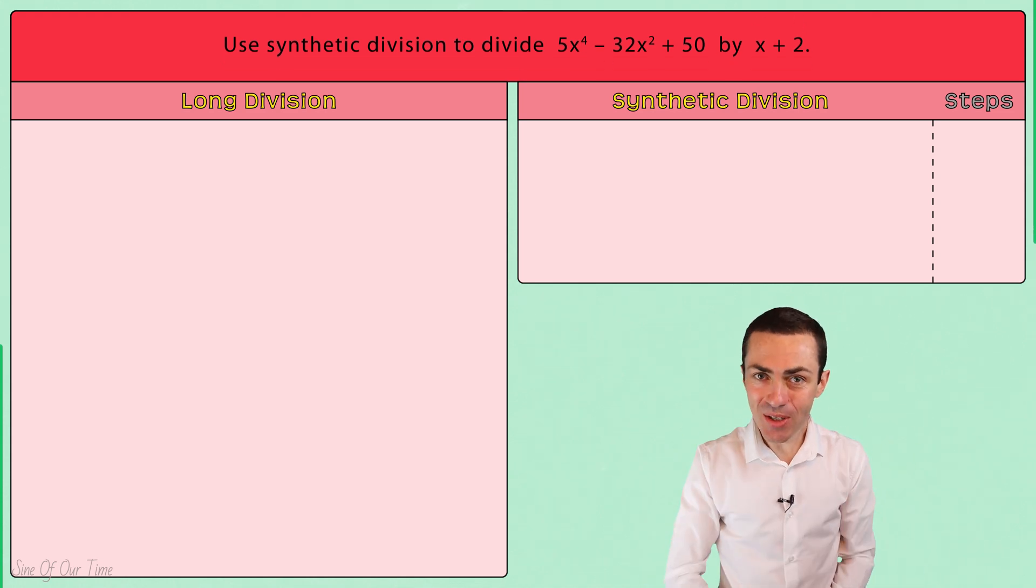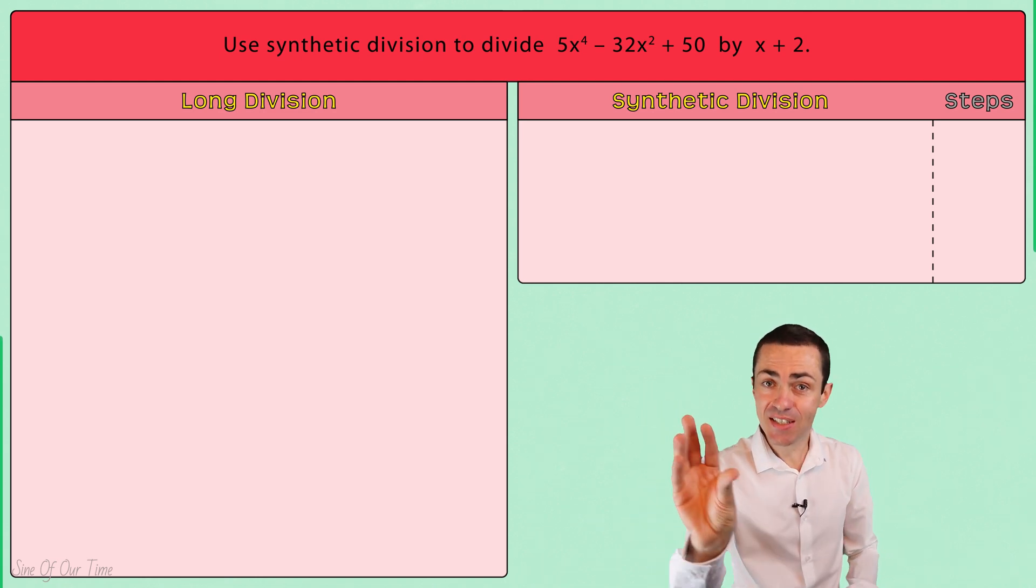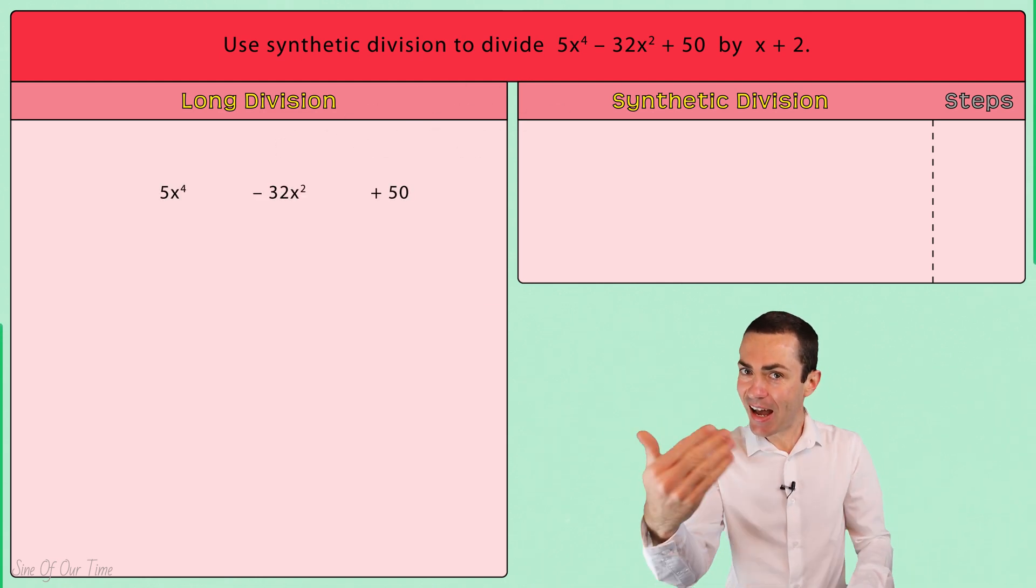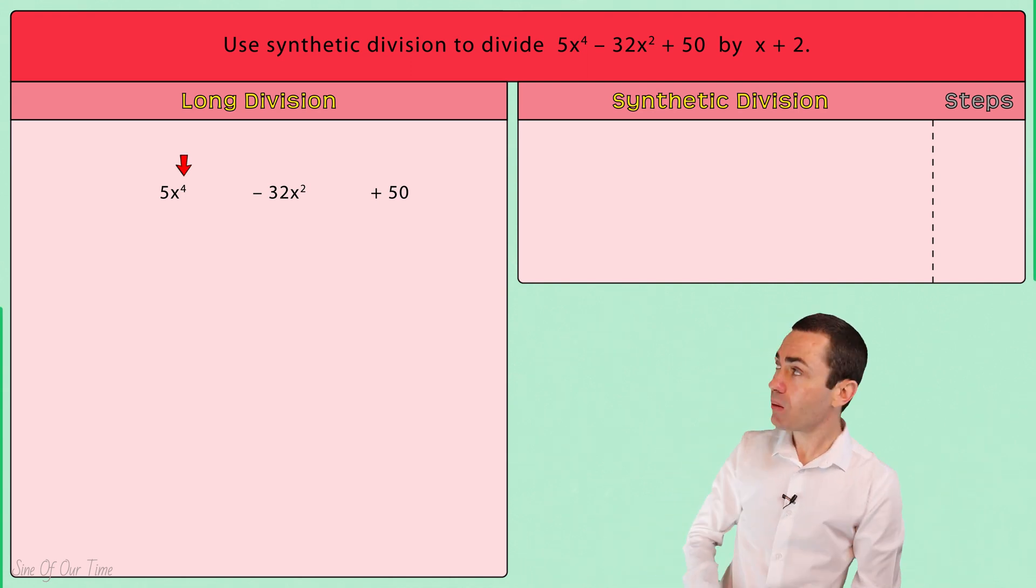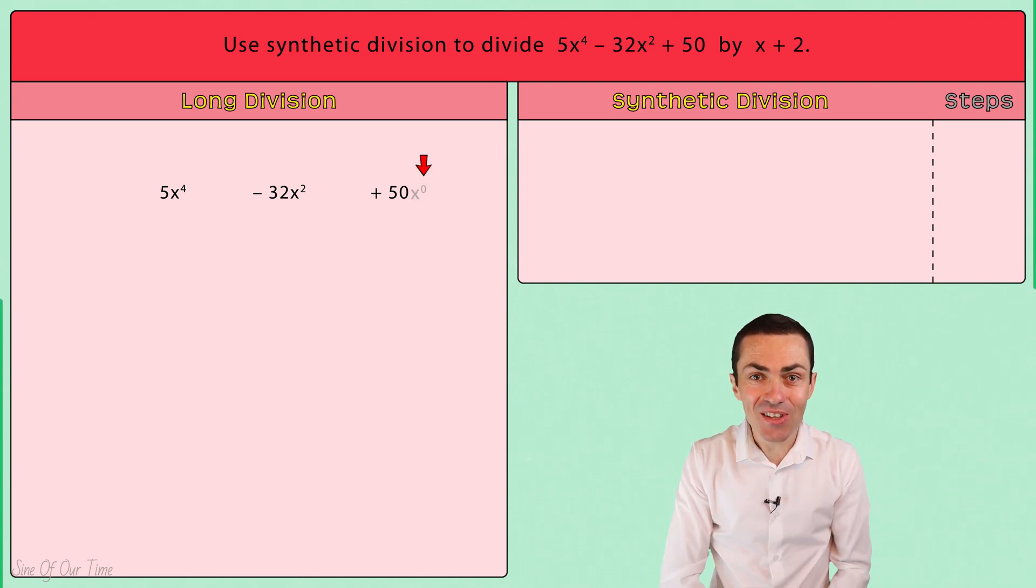Next we ensure that the dividend is written in descending powers of X. That just means from the highest exponent of X down to the lowest exponent of X, which it is in this example.